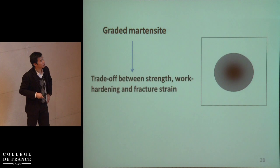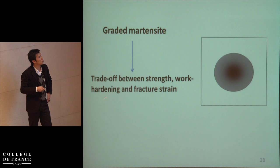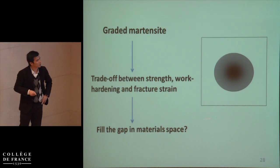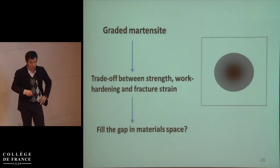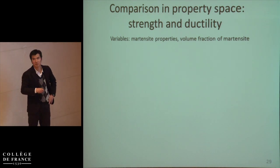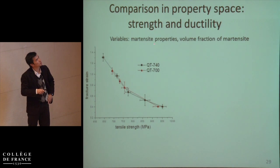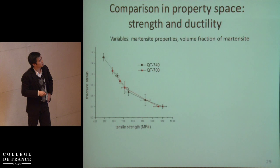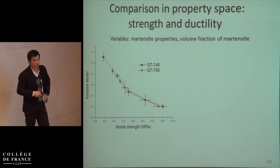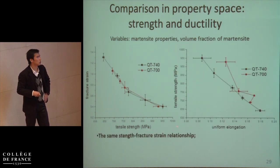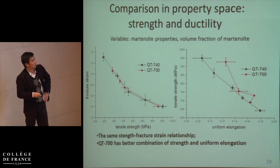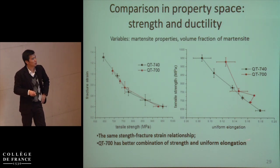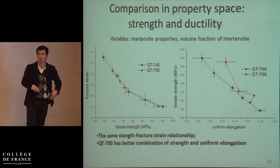I have the graded martensite and the result proves it can be a way to make trade-off between strength, work hardening, and fracture strength. To fit the topic of the symposium, I have to consider how the data fits in the material space. Comparing data in the space of strength and ductility — where variables include both the property of martensite and the volume fraction of martensite — it is interesting to find that in the space of tensile strength and fracture strength both reference alloys share the same relationship. In the space of uniform elongation and tensile strength, it is surprising to observe that QT700 — at lower temperature with a less significant carbon profile — has a better combination of strength and uniform elongation. Things occurred in the opposite direction to what I imagined.